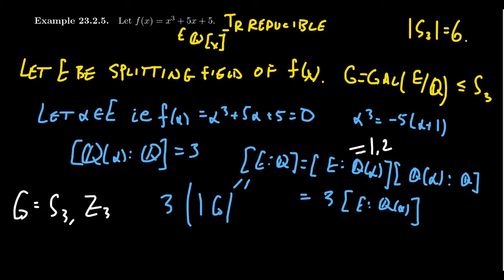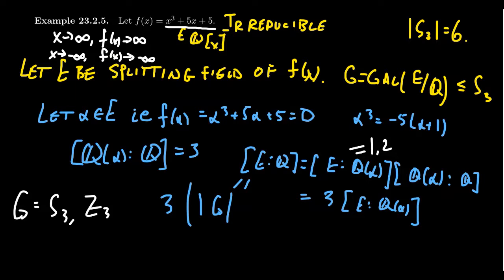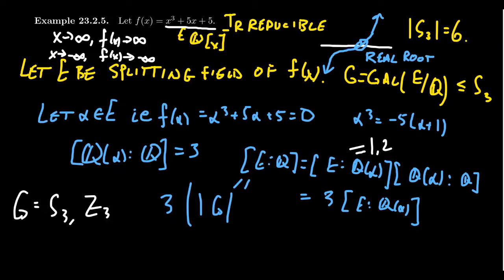Thinking of this as a real polynomial: as x → ∞, f(x) → ∞, and as x → −∞, f(x) → −∞. Because the leading term is cubic, it points up on the right and down on the left. By the intermediate value theorem, there is some x-intercept — a real root. So this polynomial has at least one real root. But there could be more.